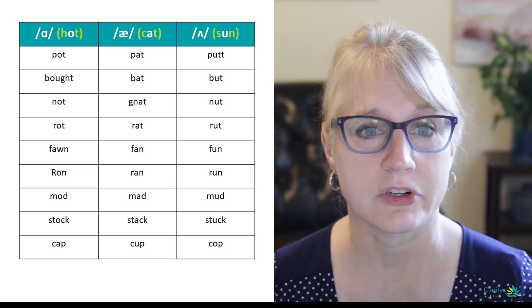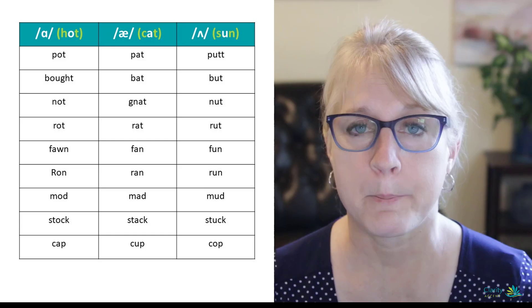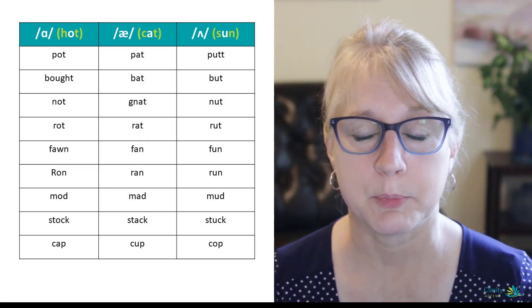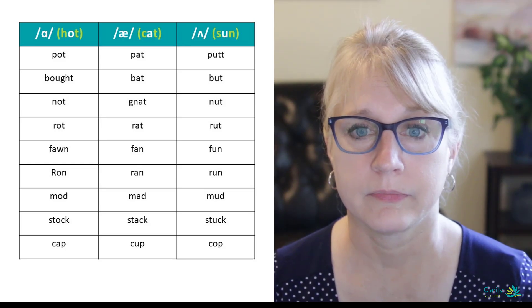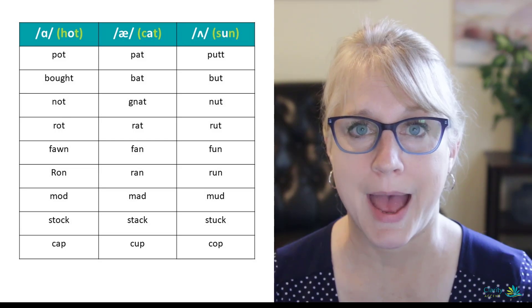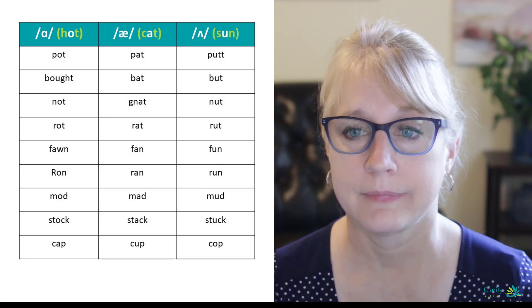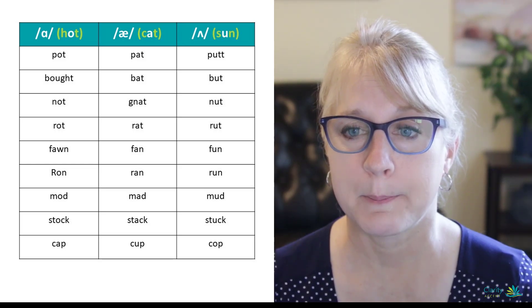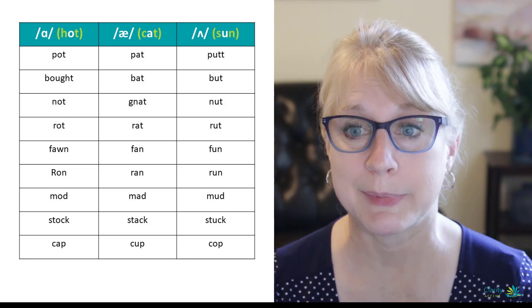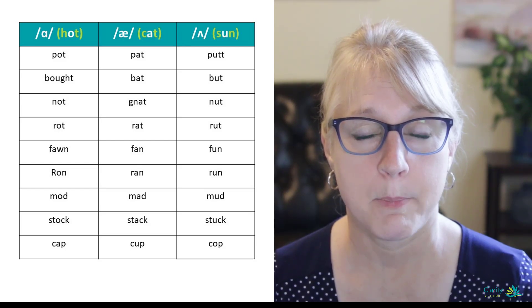So our first word in our tables, we're starting with the short O. Pot, pot. I put the pot on the stove. Moving over. Pat, pat. I gave my dog a pat on the head. Putt, putt. I learned how to putt when I went to play miniature golf.